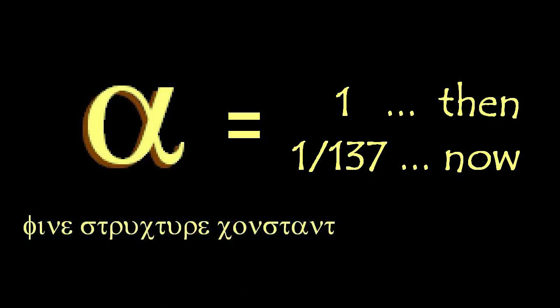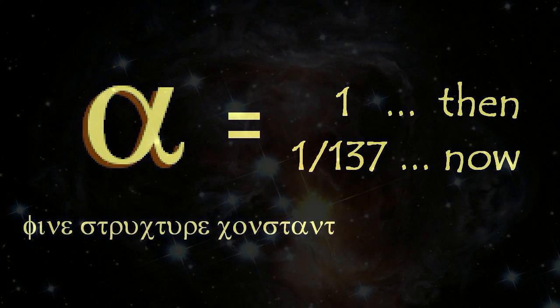Thus the fine structure constant is lowered from its initial value which must be set as unit value, or 1, when matter is uniformly spread out in space, to the present value of 1/137th, with lots of clumps.